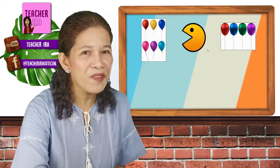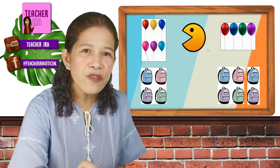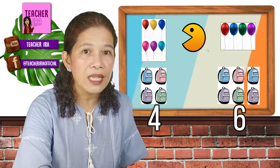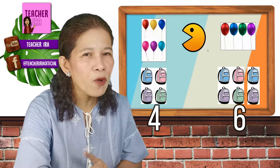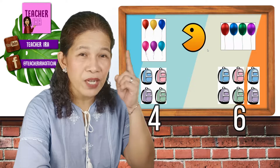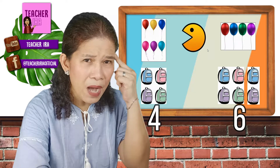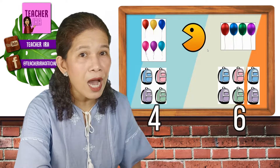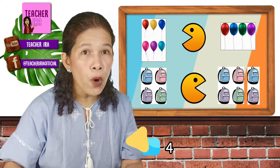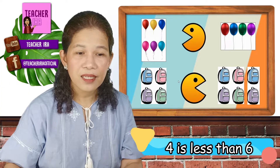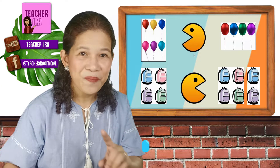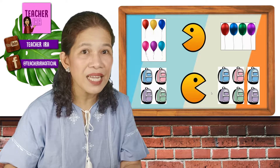You draw the symbol with the mouth facing to the set with more. Are you getting it now? Let me have another example. I have here a set of bags. The first set has 4, and the other set has 6. Now, what do you think will Pac-Man eat? The one with 4 or with 6? Because he loves more, his mouth would be opened to the set with more. So you would say 4 is less than 6. And the other one would say 6 is greater than 4. That's how you understand greater than and less than.